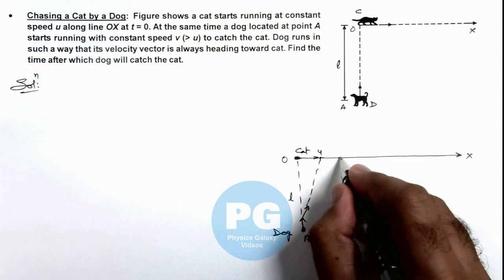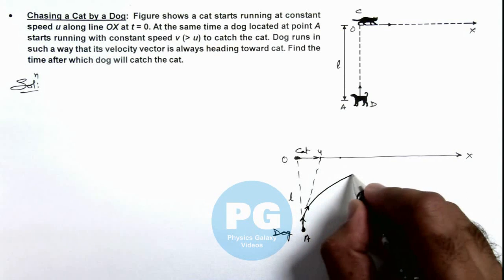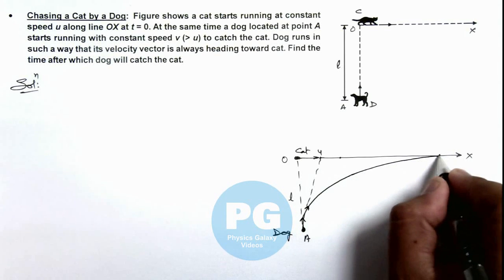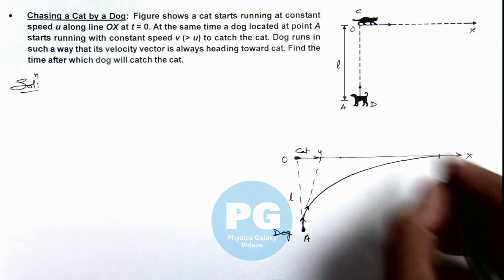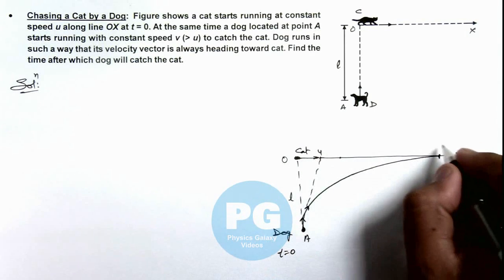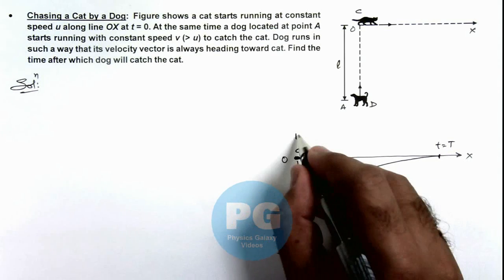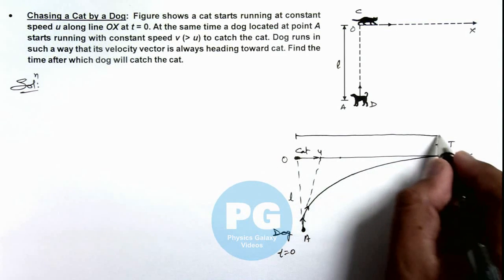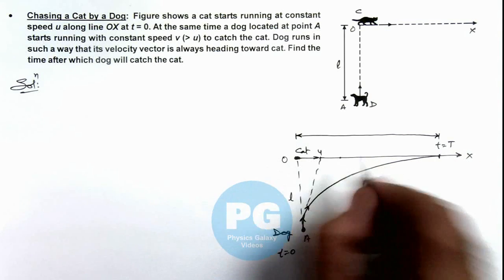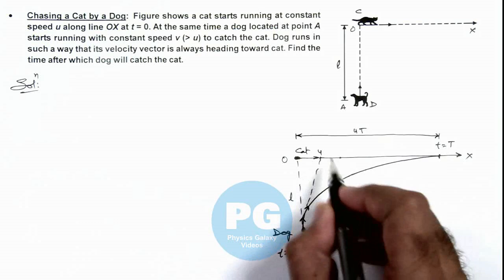Later on further it'll move and gradually you can say the dog will also be moving in such a way that after some time it'll catch the cat. Say it starts at t equal to zero and the cat will be caught at time t equal to t. Then the total distance the cat will travel in this time along the x direction can be written as u t because cat is running at a uniform speed u.